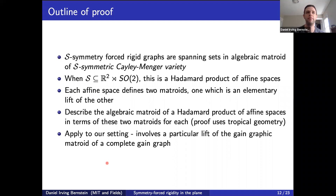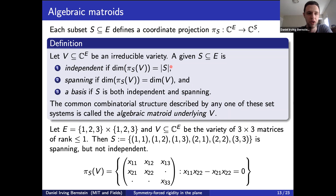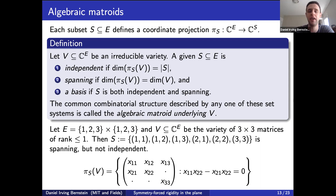I'll use the notation C^E to denote the complex vector space whose coordinates are indexed by elements of some set E. Every subset of E defines a coordinate projection. Given an irreducible variety V, a subset S of coordinates is independent if the dimension of the projection of V onto those coordinates equals the cardinality of S — that is, projections that give a full-dimensional image when restricted to the variety. A set is spanning if the projection's dimension equals the dimension of the original variety, and a basis is both independent and spanning. The algebraic matroid of V is the combinatorial structure described by any one of these set systems.